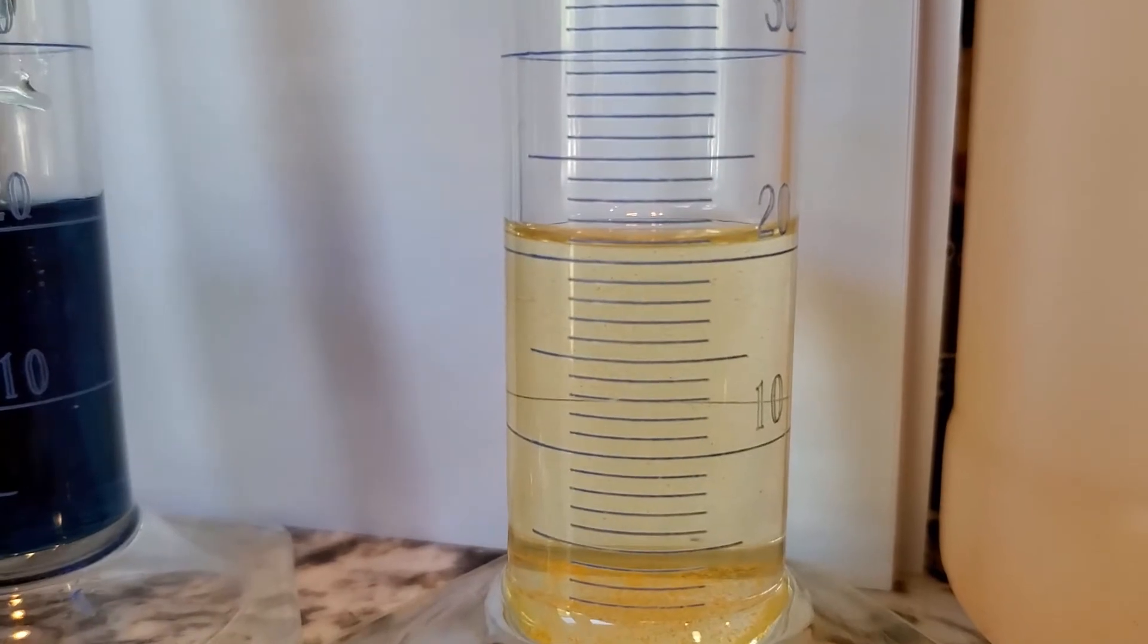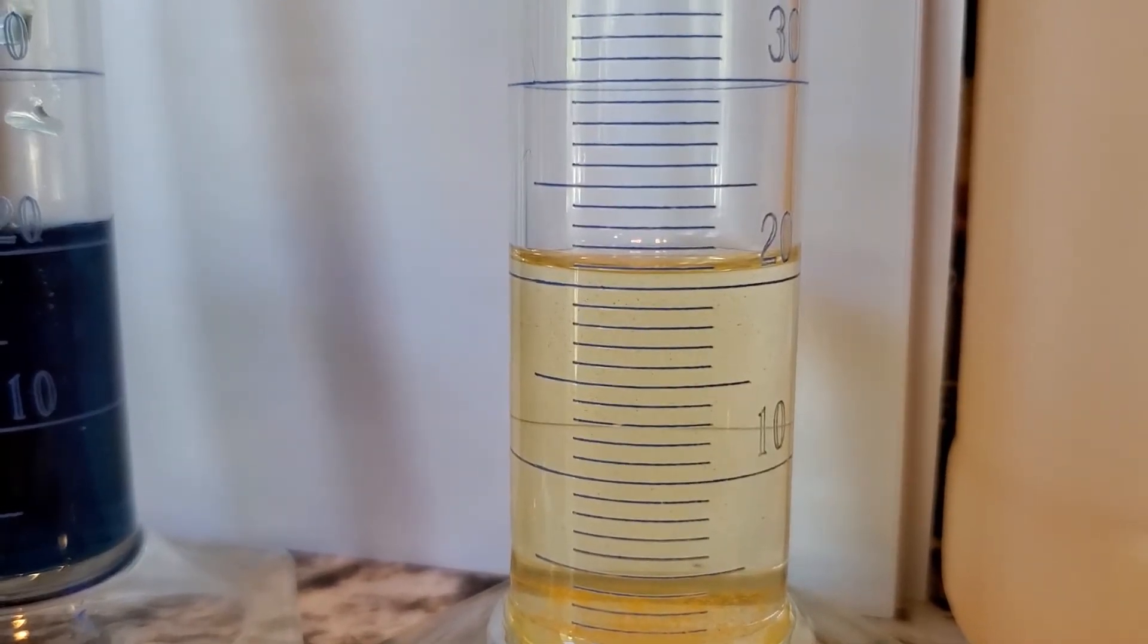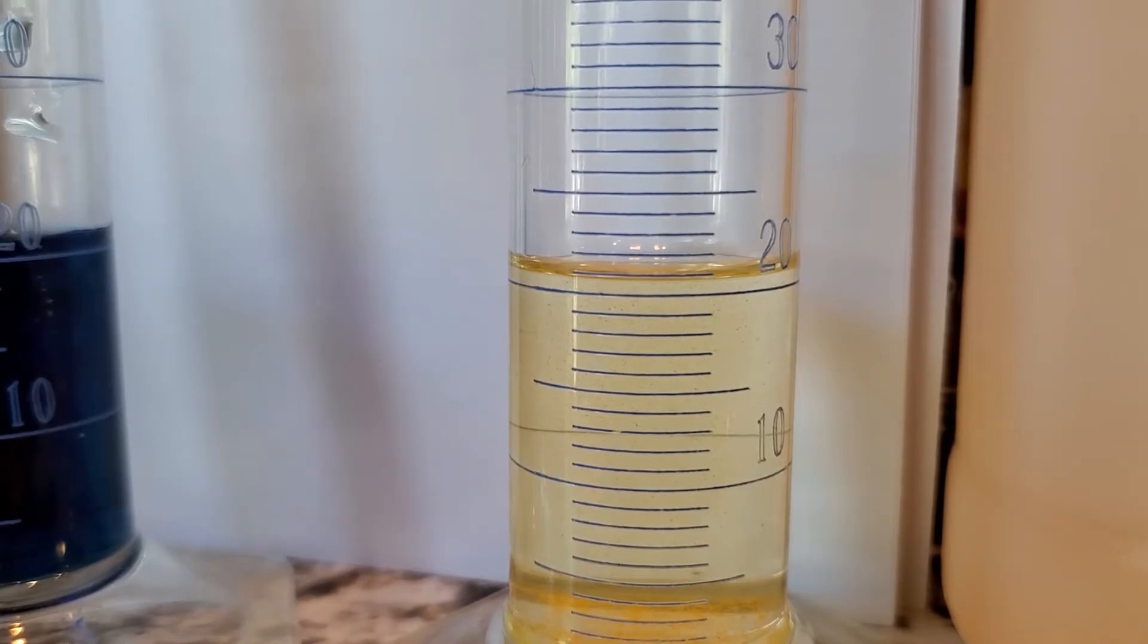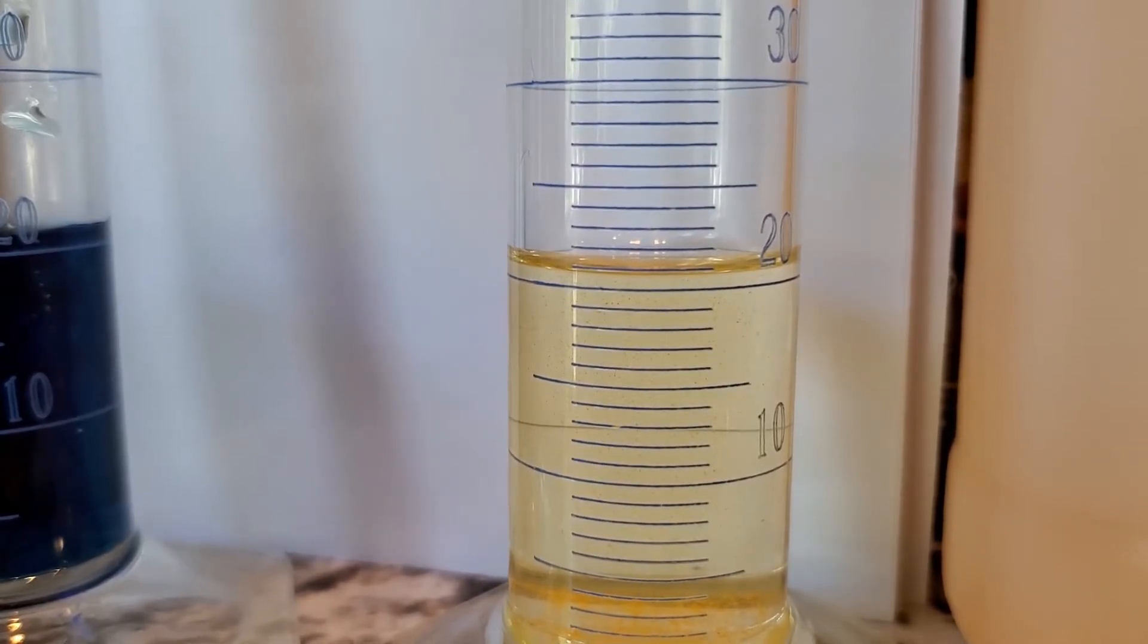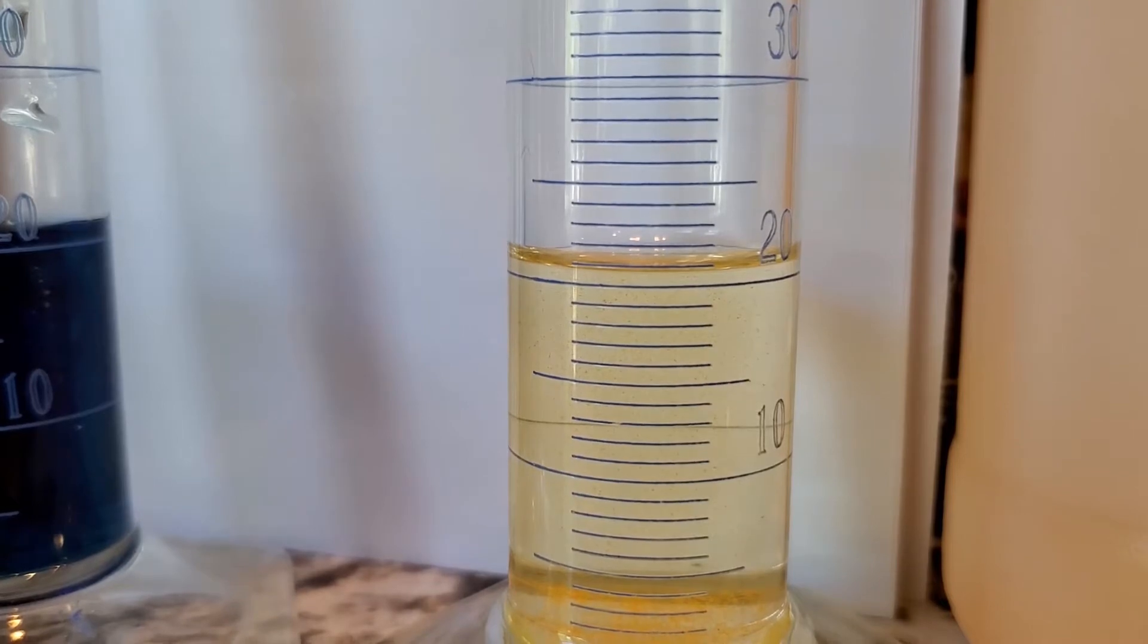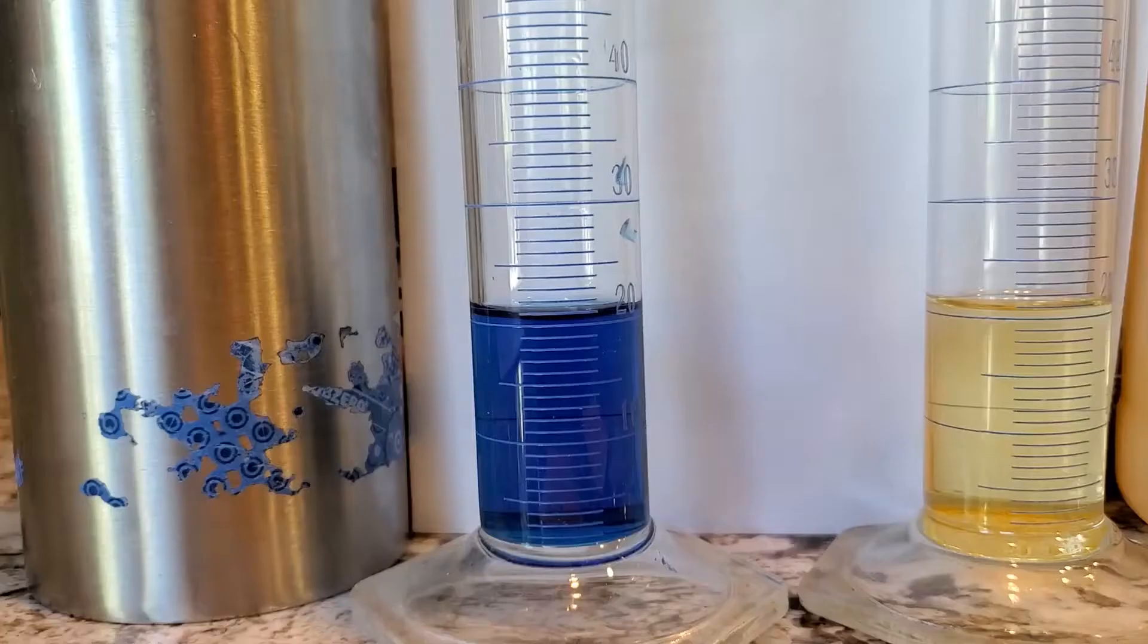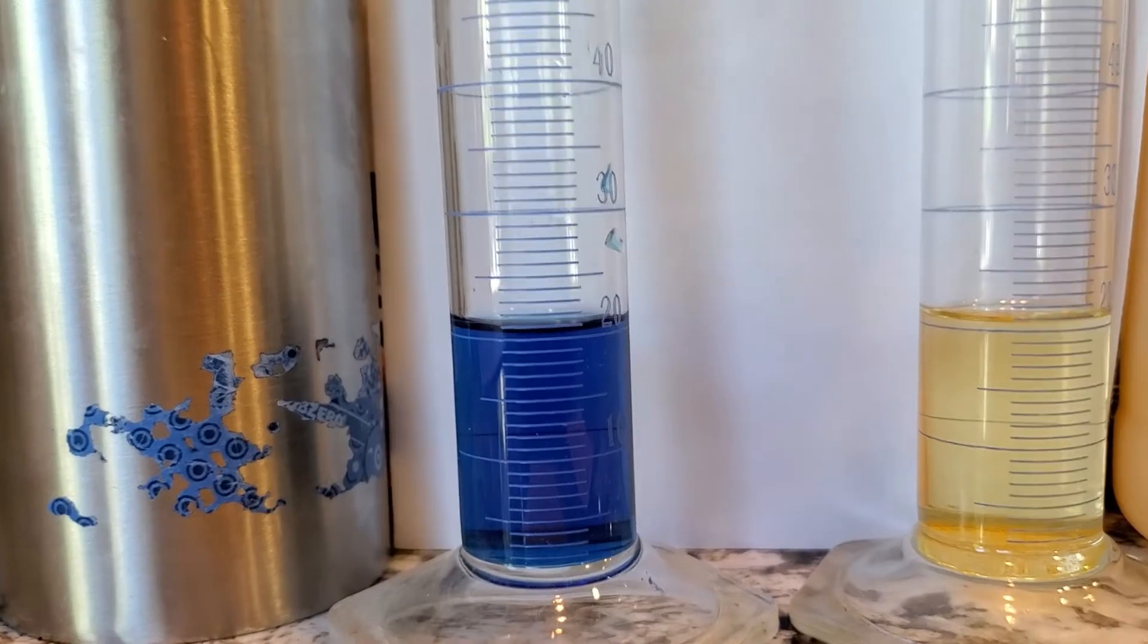There we go. Let's take a look at the yellow alcohol. The bottom of the meniscus looks like it may barely drop below 21, so I'm gonna call that 20.9. The bottom of the meniscus for the...